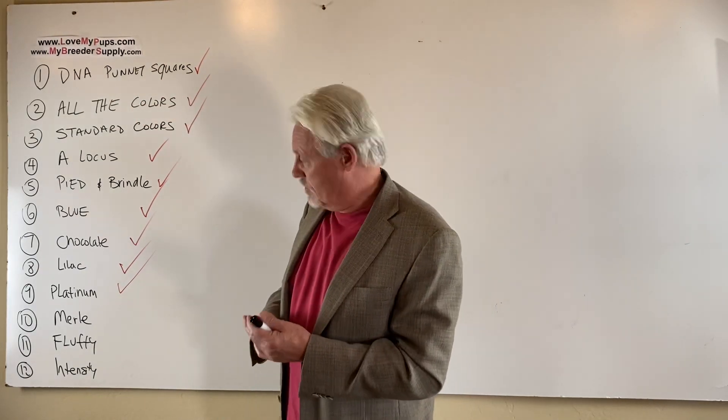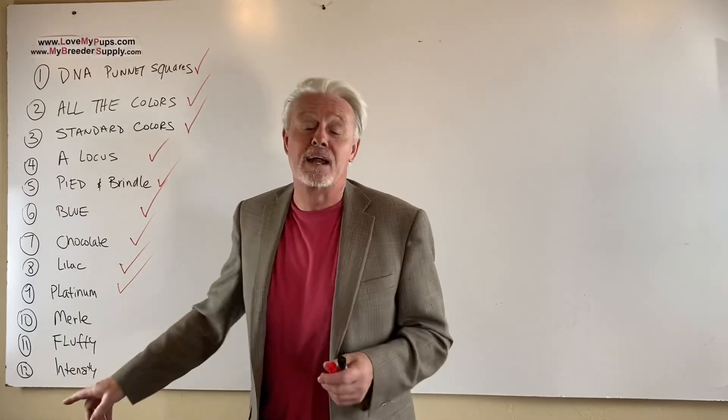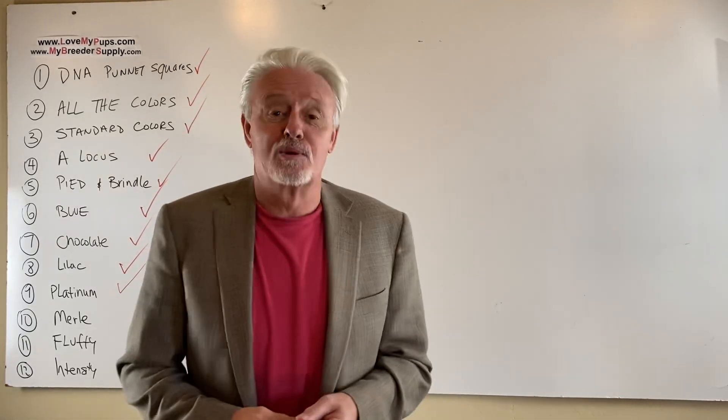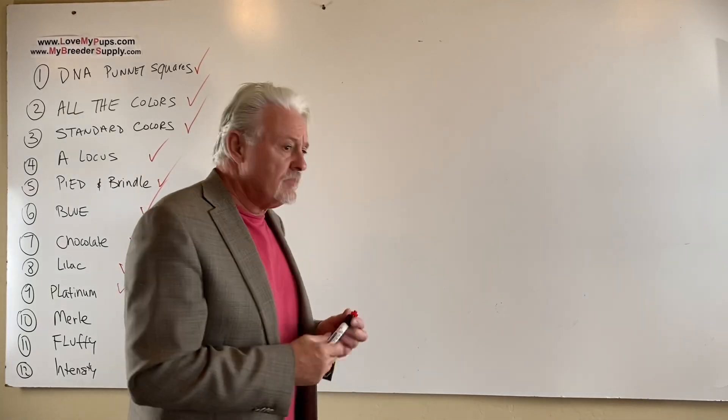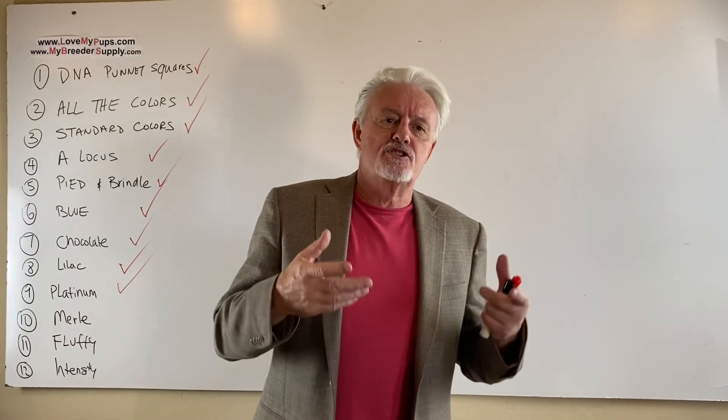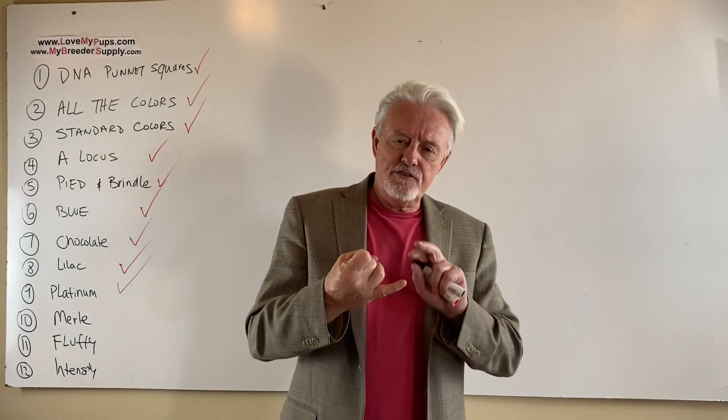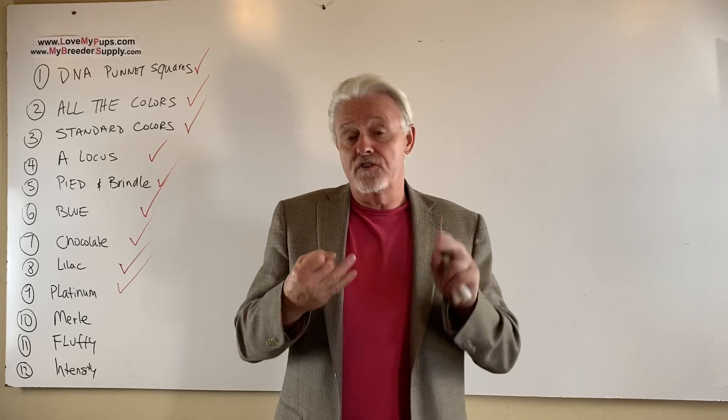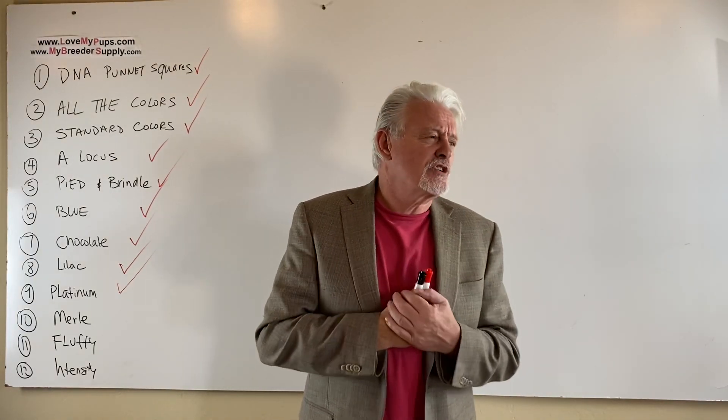We are going on with the 12-part series and we've finished Platinum and now we're going on with Merle. And by the way, I think I'm going to add a bonus 13th one at the bottom because 13th is good luck, right? So the Merle gene. Merle is a variation in colors on a coat that produces two colors or more.